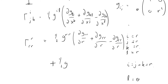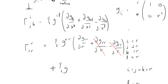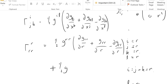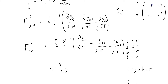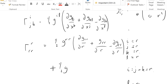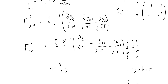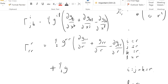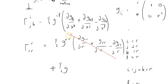Two of those terms cancel because they have opposite signs. And g_rr is just equal to 1, so differentiating it with respect to anything gives zero. The whole thing is equal to zero. So Γ^r_rr = 0.